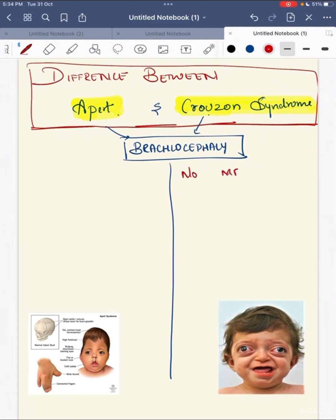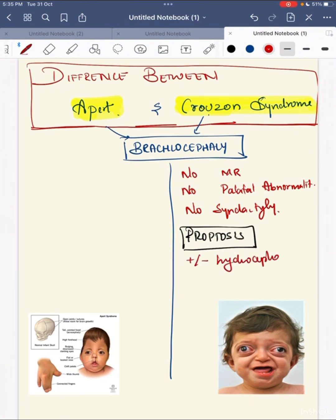First, in Crouzon syndrome, the child will not have mental retardation. The child will not have any palatal abnormalities. Plus, the child will not have syndactyly. While the child will have a prominent feature of proptosis. This proptosis can also be present in Apert syndrome, but it is a most specific feature of Crouzon syndrome. Then the child can present with or without hydrocephalus.